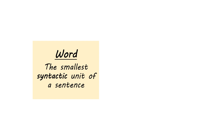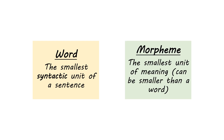When doing syntax, the smallest unit we look at is a word-level unit. When we're doing morphology, on the other hand, the smallest unit we look at is called a morpheme. This is the smallest unit of meaning — it can be smaller than a word, and it can sometimes not be clearly identifiable within a word. But a morpheme is a small unit that carries meaning with it; it's often smaller than a word.